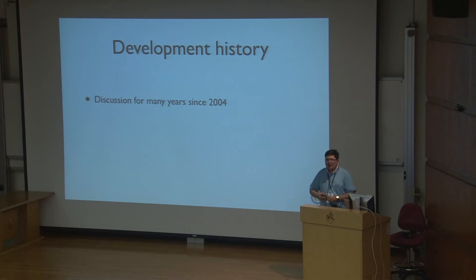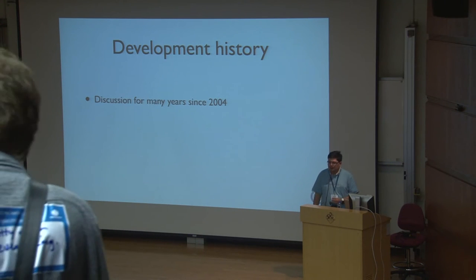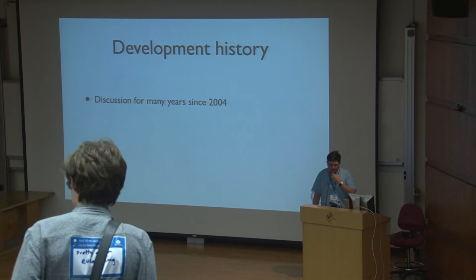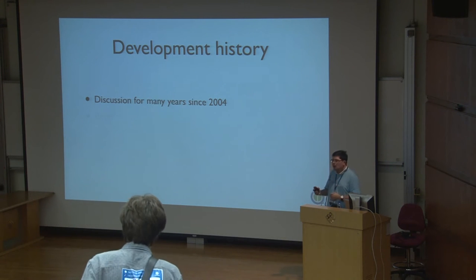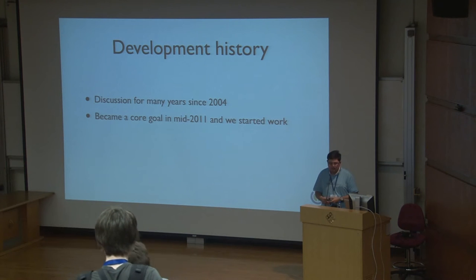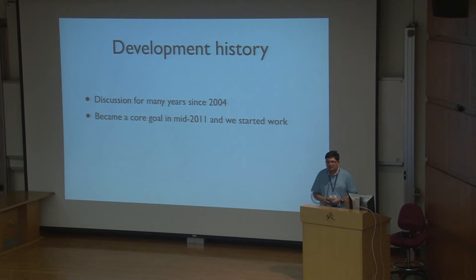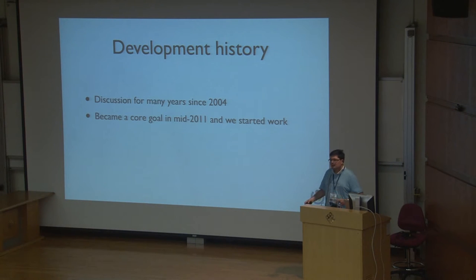Those conversations were very up in the air. Wikitext is kind of messy, but actually it's better than HTML, which was the alternative we were discussing at the time. But it became a core goal for the Wikimedia Foundation, and it became significantly resourced. We started actual work midway through 2011, so we've basically been working on visual editing for two years. Visual editor is a continuous work in progress.